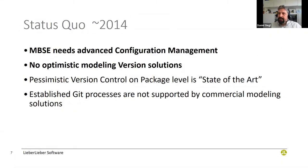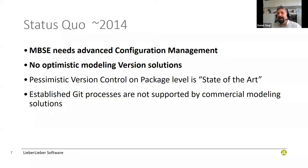Let's look back a few years — the year 2014, though anything between 2001 and 2009 or 2010 would be essentially the same. People found out that MBSE needs advanced configuration management, because the commercial solutions in the market only allowed for pessimistic version control. But in the software industry, everybody has been using optimistic version control for quite some time. Also, working at the package level is not the best way to version a model, and none of the solutions supported established Git processes.